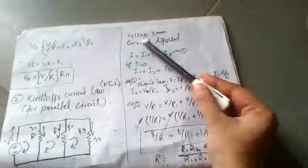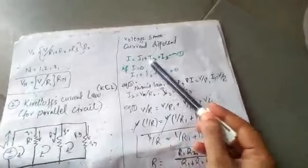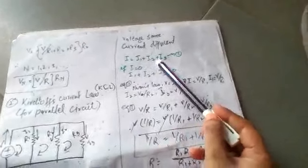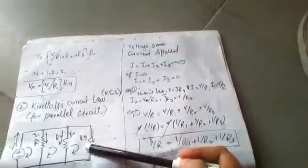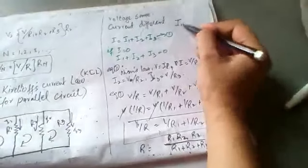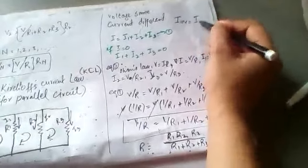So if this is a parallel circuit, we can analyze the resistance in the parallel circuit. We know that in a parallel circuit, the voltage is the same across all branches and the current is different. With 3 resistors, the total current is the sum of the branch currents.